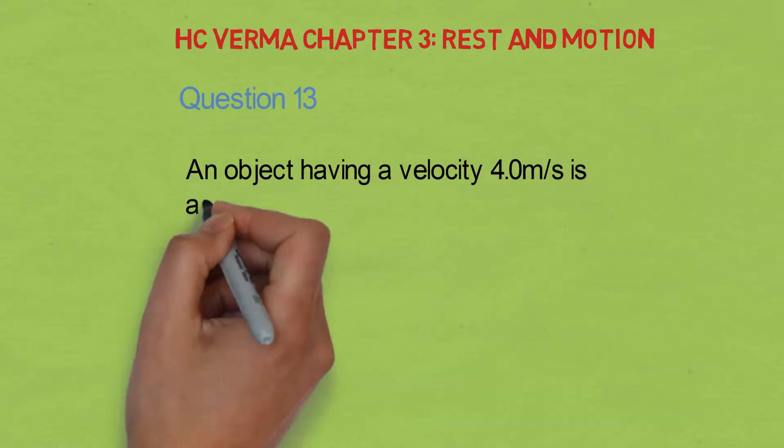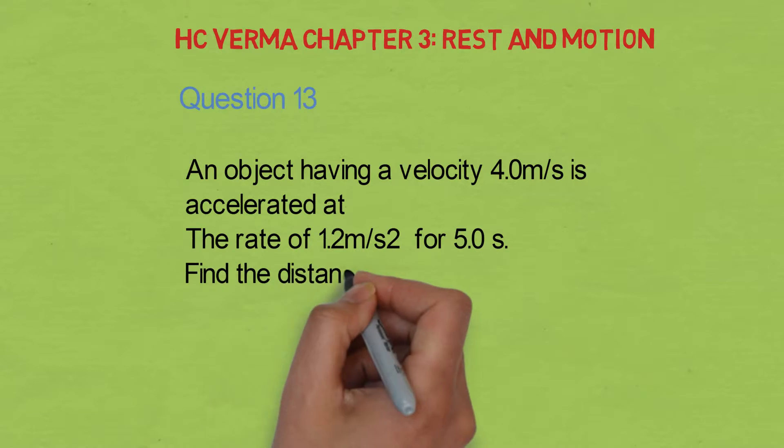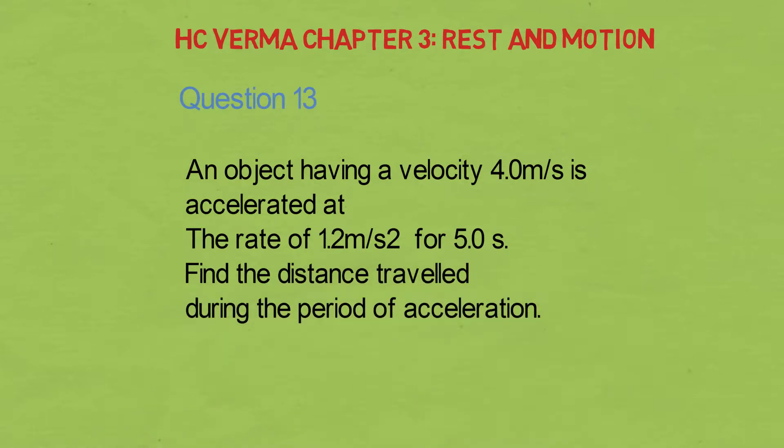An object having a velocity of 4.0 m per second is accelerated at a rate of 1.2 m per second square for 5.0 seconds. Find the distance traveled during the period of acceleration.